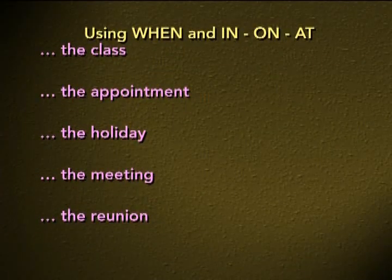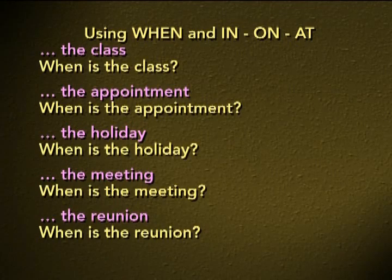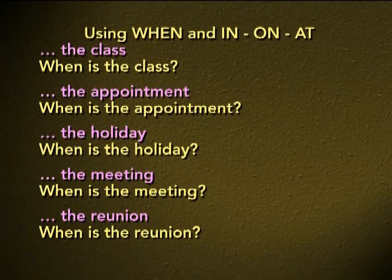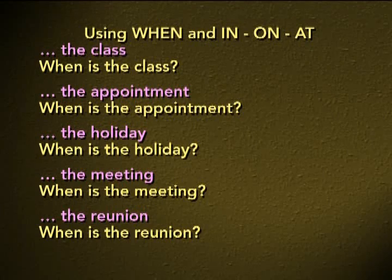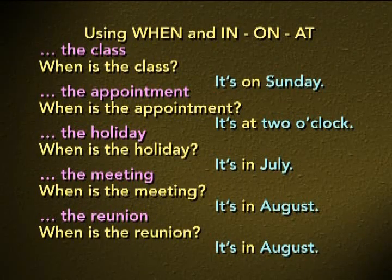Now look at the following. You'll see the question word 'when' with various possibilities: the class, the appointment, the holiday, the meeting, the reunion. So the question would be 'when is the class,' 'when is the meeting,' etc. On the right side you'll see possible answers with 'in,' 'on,' and 'at': it's on Sunday, or it's at 2 o'clock, or it's in July, or it's in August.